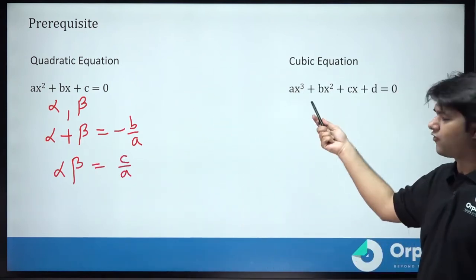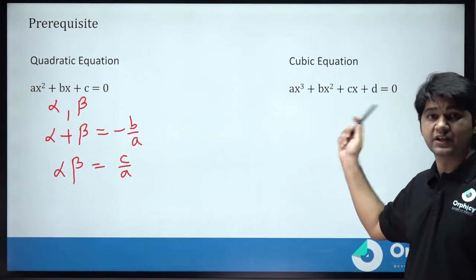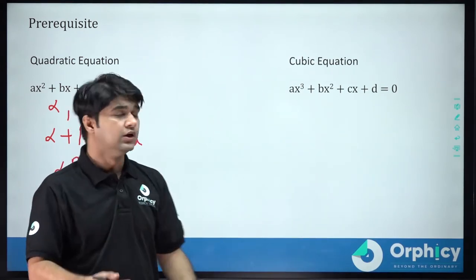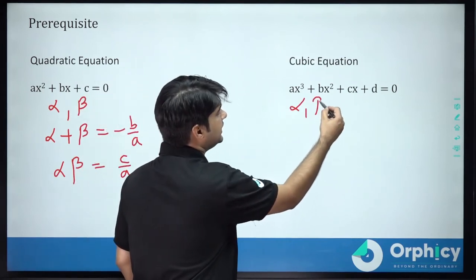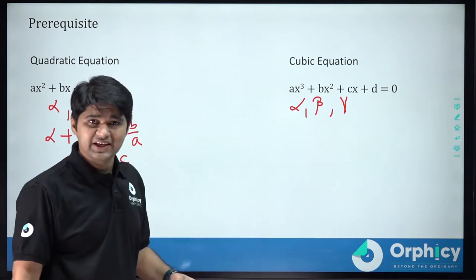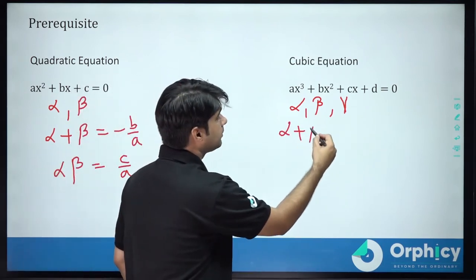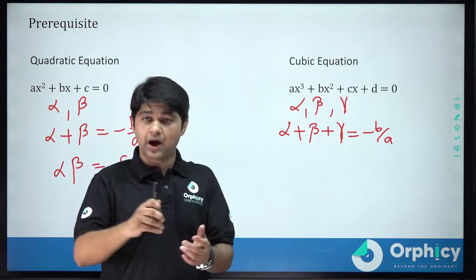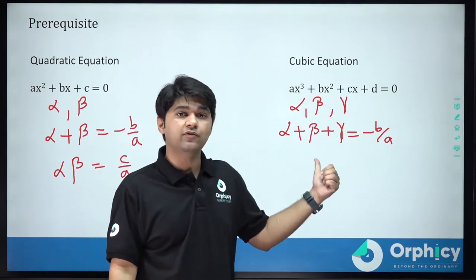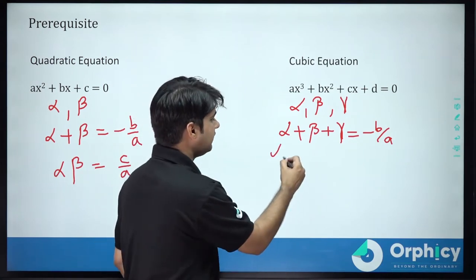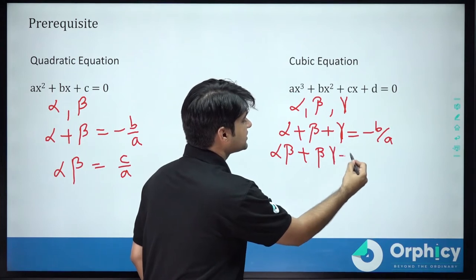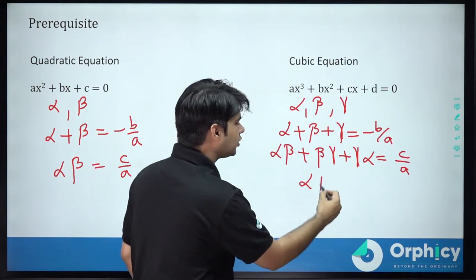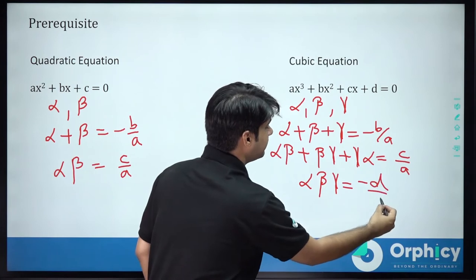For a cubic equation of the form ax³ + bx² + cx + d = 0, where a should never equal 0, since it is degree three we can have three roots — alpha, beta, gamma. The sum of roots alpha + beta + gamma = −b/a, the sum of roots taken two at a time alpha·beta + beta·gamma + gamma·alpha = c/a, and the product of roots = −d/a.